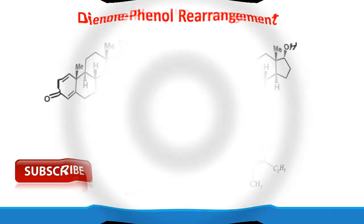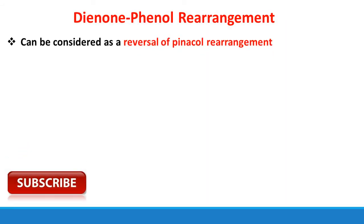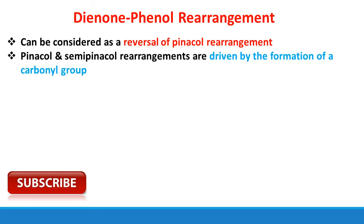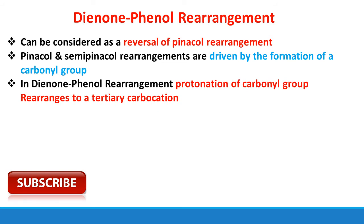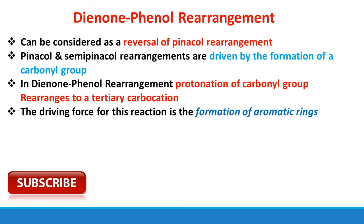This reaction can be considered as a reversal of the Phenol Rearrangement. The mechanism is somewhat the reversal of Phenol Rearrangement. Phenol and semi-Phenol rearrangements are driven by the formation of a carbonyl group. In this rearrangement, protonation of the carbonyl group rearranges to the tertiary carbocation — meaning the reverse of that reaction. The driving force for this reaction is the formation of an aromatic ring. This is a very important point for this reaction.